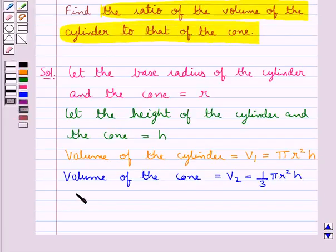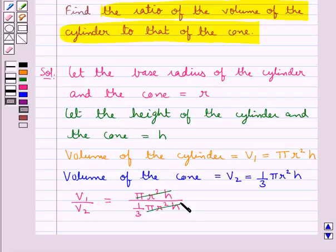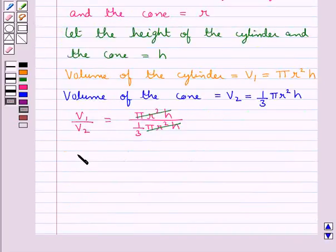That is V₁ upon V₂ equals πR²H upon 1/3 πR²H. Now πR²H and πR²H gets cancelled, and we have V₁ upon V₂ equals 1 upon 1/3, or you can say V₁ upon V₂ equals 3 upon 1.